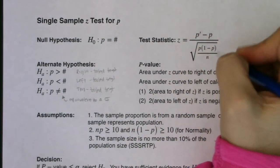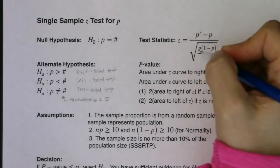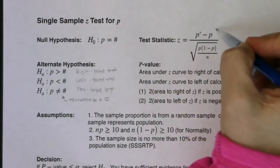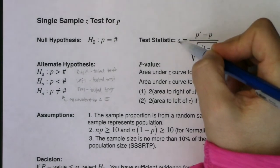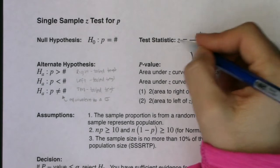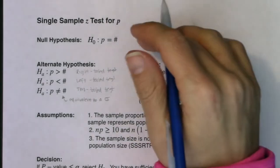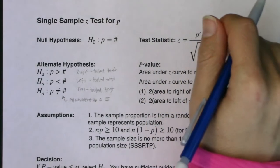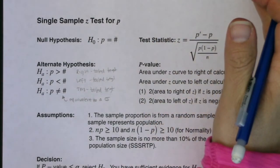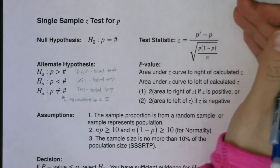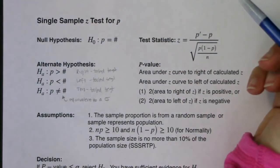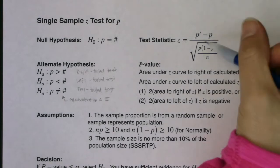Most z-scores that are reasonable fall between negative three and three on the standard normal curve. When you get something far away from negative three or far away from three, that actually means we're less likely to keep the null — we're probably going to reject it. But I'll come back around to that.